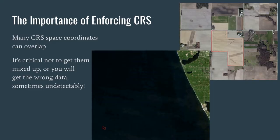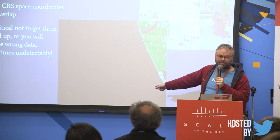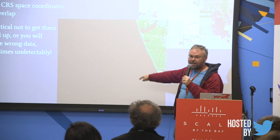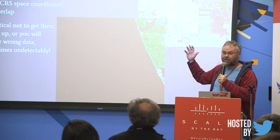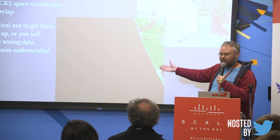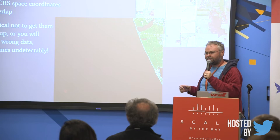The key takeaway is what happens when you get the CRS wrong. Here's a field in UTM zone 15 — you can see it's a field outline. If I use the wrong CRS, that field ends up in the middle of Lake Erie. That's the worst possible outcome: no error, no missing data, just a bunch of water where there should be a field. At massive scale you won't check every field, and you've just given out wrong results.